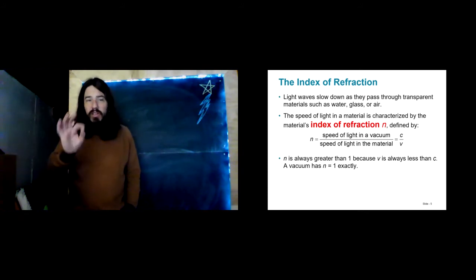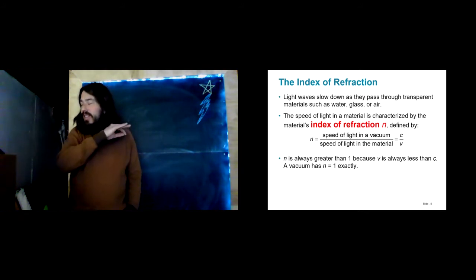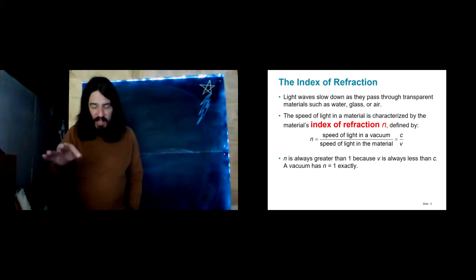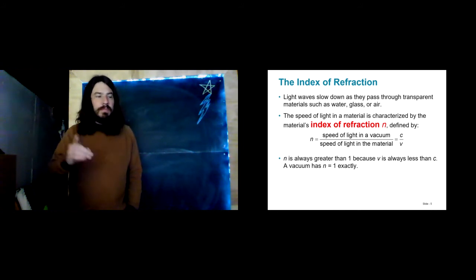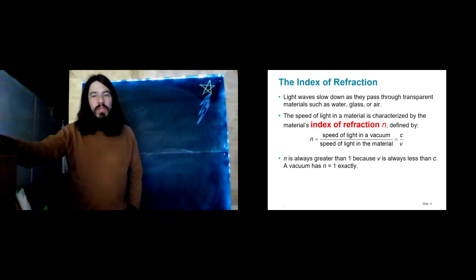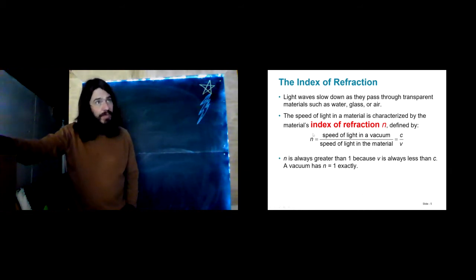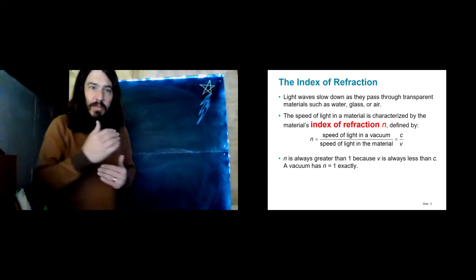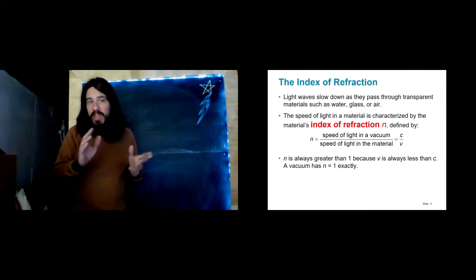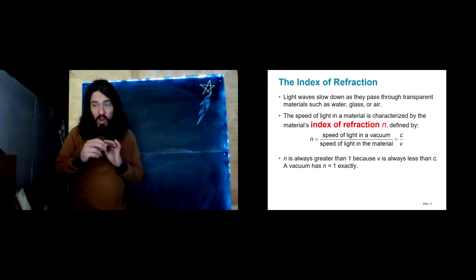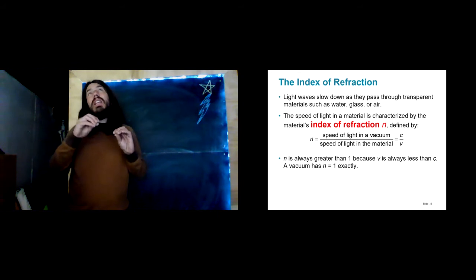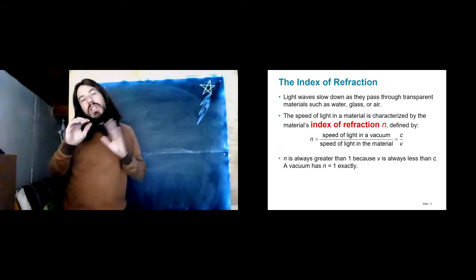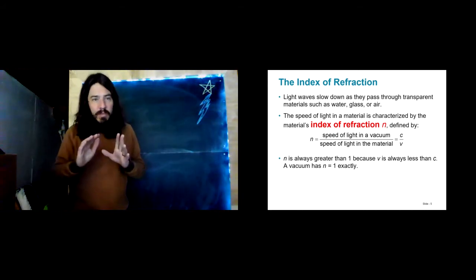The speed of light is characterized by an index of refraction N. Notice that N is a unitless number, and it equals the speed of light in a vacuum divided by the speed of light in some material. N is always greater than one because light never travels faster in any substance than it does in empty space. We're going to find out in the next chapter that this index of refraction N is also related to how much light bends when it moves from one medium to another — you've probably observed that if you have contacts or glasses.